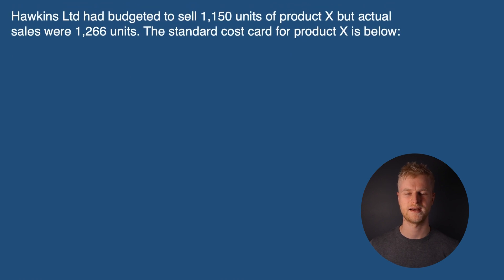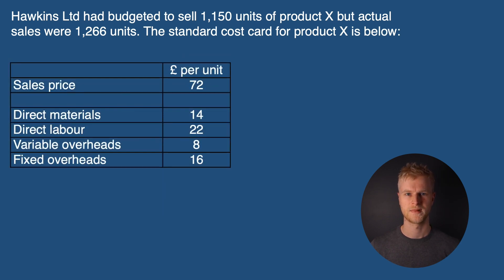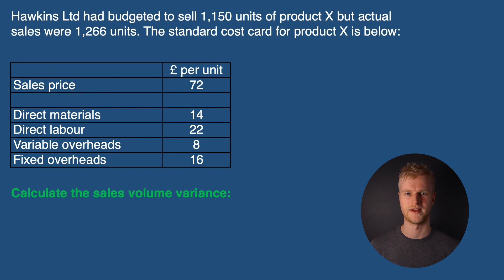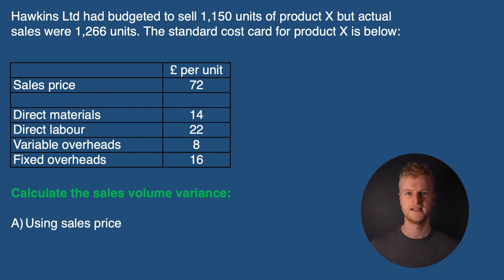Let's take a look at a previous example and calculate the sales volume variance. Hawkins Limited had budgeted to sell 1,150 units of Product X but actual sales were 1,266 units. The standard cost card for Product X is on screen now: sales price per unit is £72, direct materials £14, direct labour £22, variable overheads £8, and fixed overheads £16. Calculate the sales volume variance first using the sales price, then under marginal costing, and then under absorption costing.